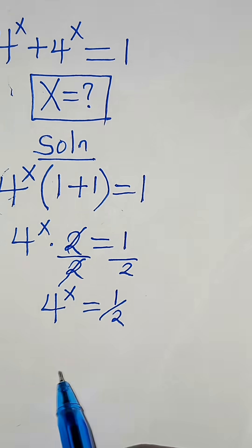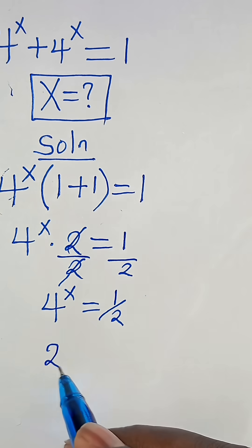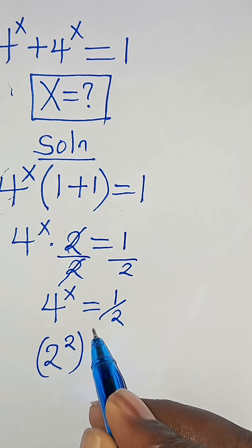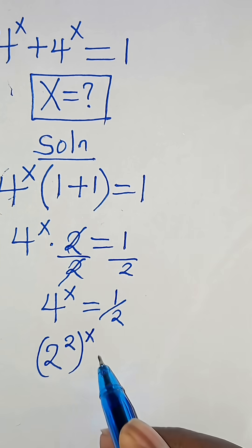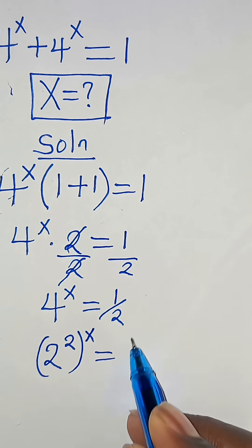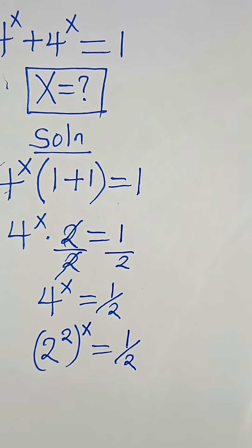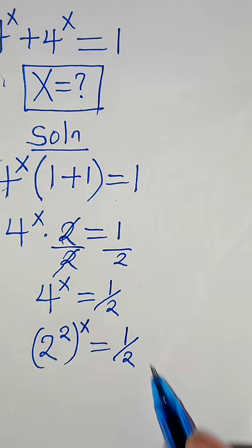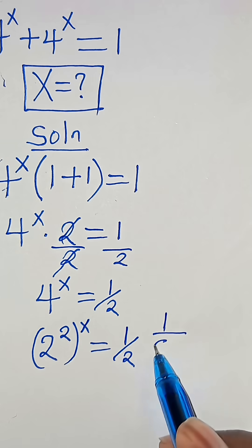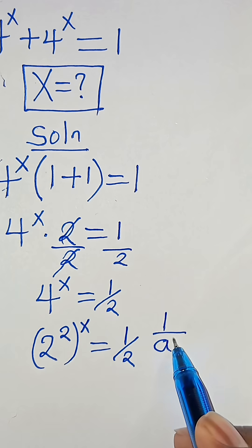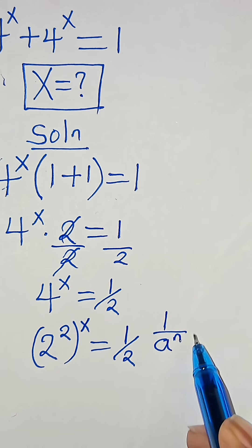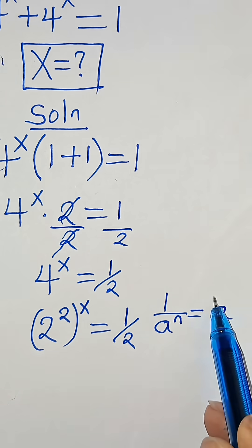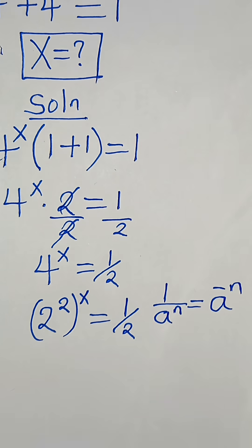We can express 4 as 2 to the power of 2, raised to the power of x, and this equals 1 over 2. We have the property that 1 over a to the power of n can be expressed as a to the power of minus n.